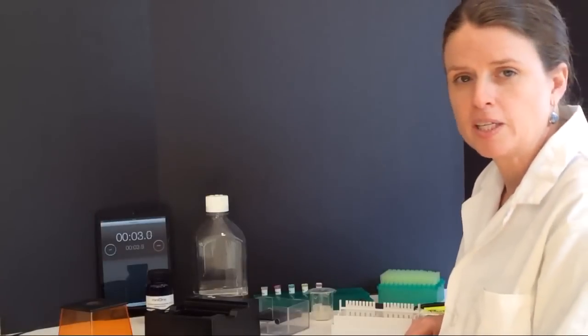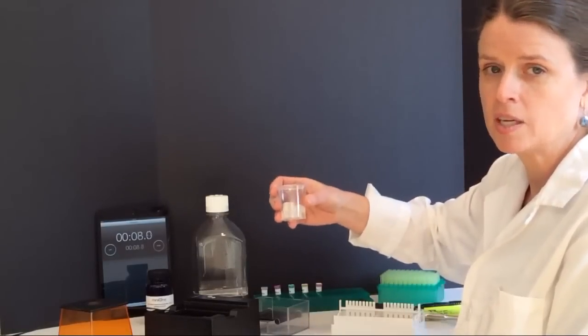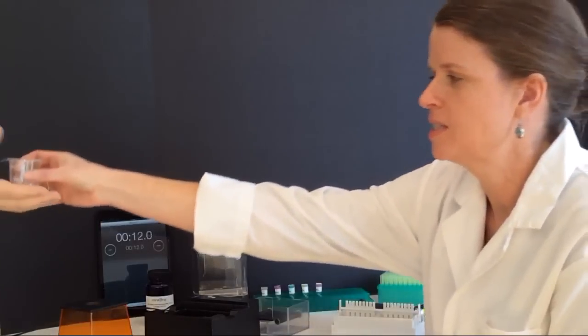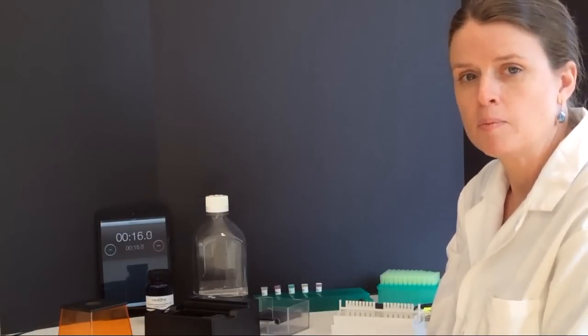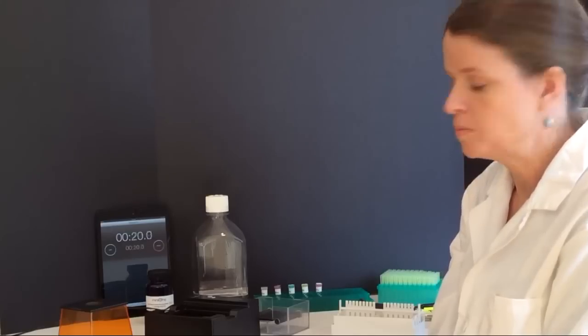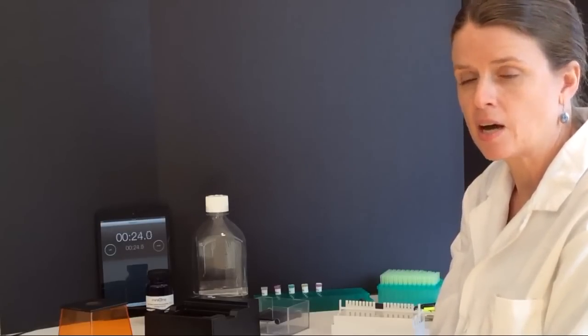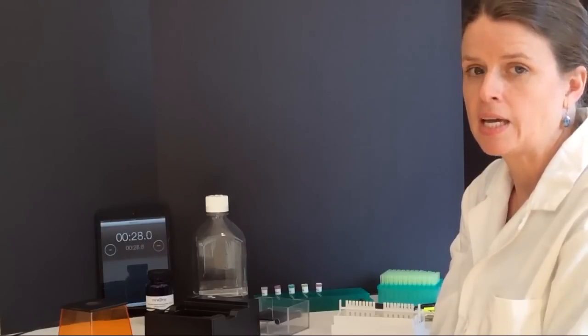The first thing we're going to need to do in our lab today is pour a gel. To do this, we're going to be using the Mini One's gel cups. I'm going to ask my assistant to please microwave our gel cups. The gel cups come pre-measured to pour a gel specifically for use with the Mini One System. It contains agarose and the gel green DNA stain.